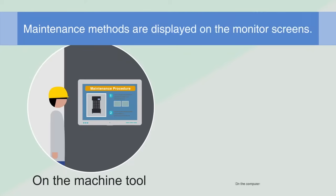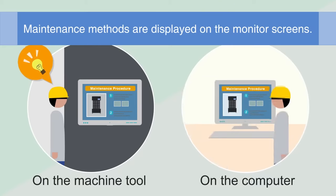Maintenance methods are displayed on the monitor screens when an error code is triggered. There's no need for referencing the manual every time a problem occurs.